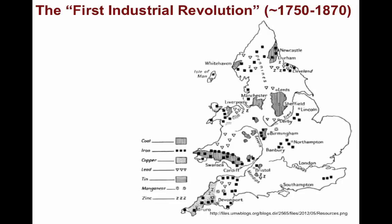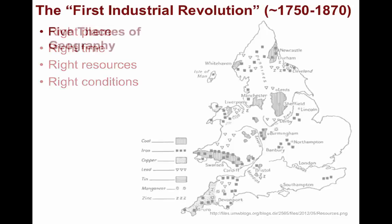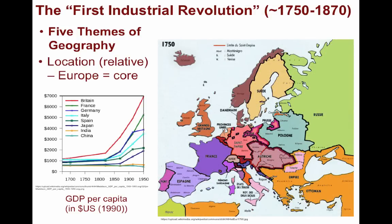Looking at the five themes of geography, we can see some of the reasons why Britain was in the right place, at the right time, with the right resources, and the right conditions. Starting with location, Europe at the time was the core region of the world, with more money and technology than anywhere else. Britain's favorable relative location was a huge advantage, and as they improved, so did the region around them.